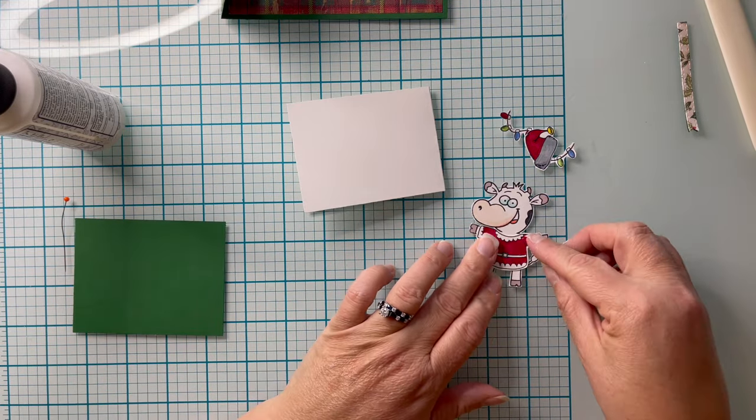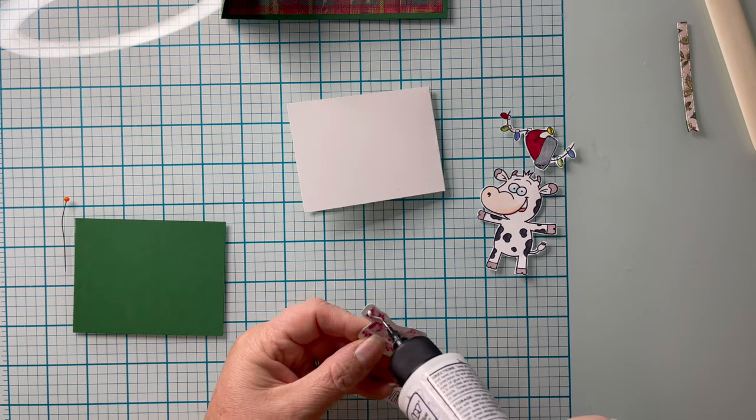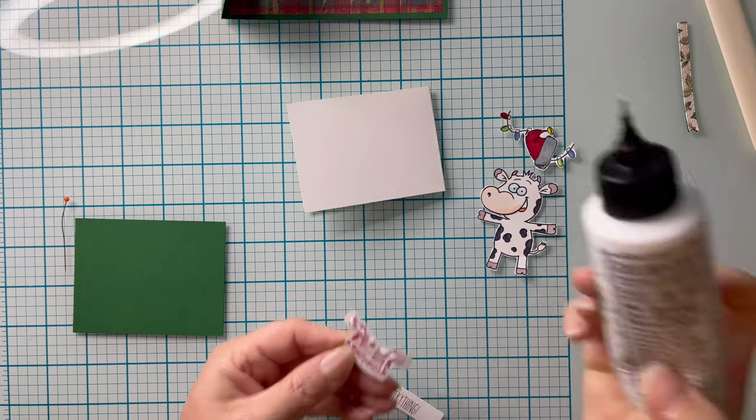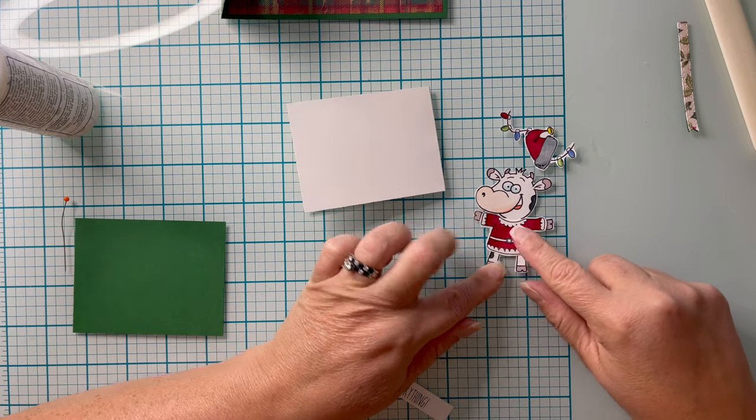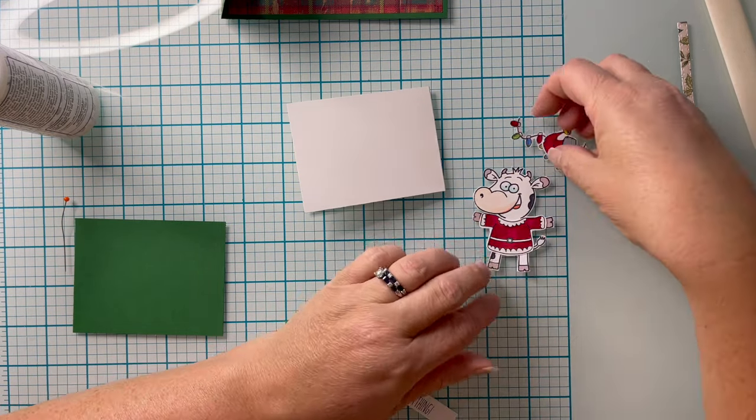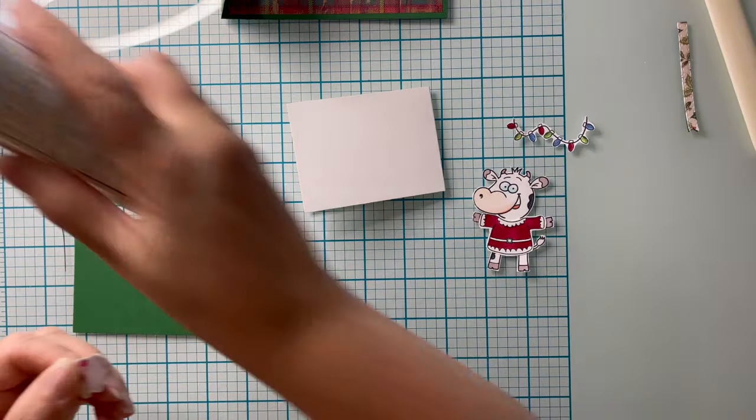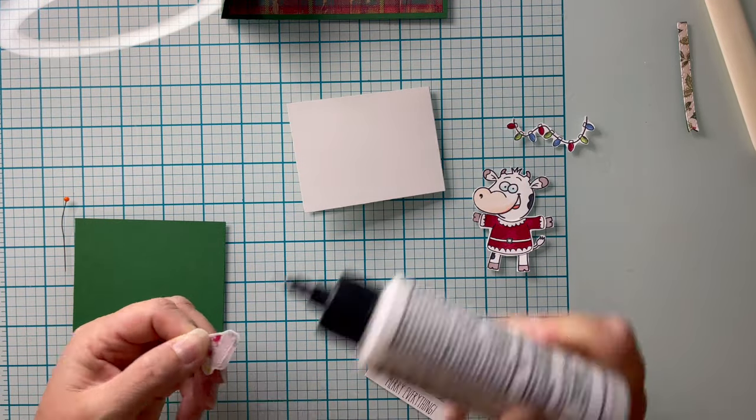I selected some pieces from the dress-up kit for Christmas, and I'm going to put Santa's jacket on my cow, along with his hat and a string of lights. I'm just going to layer those right on top of one another using my Precision Craft Glue.